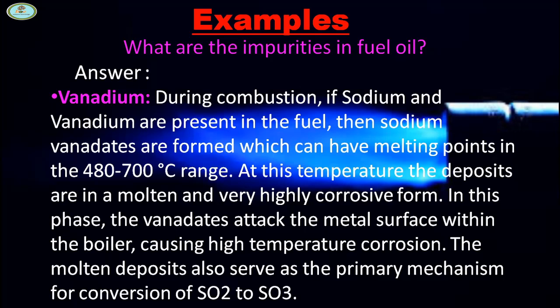In this phase, the vanadium attacks the metal surface within the boiler, causing high temperature corrosion. The molten deposits also serve as the primary mechanism for conversion of SO2 to SO3.